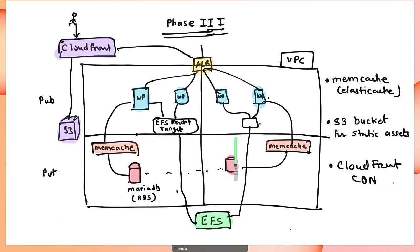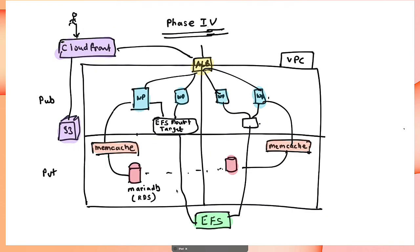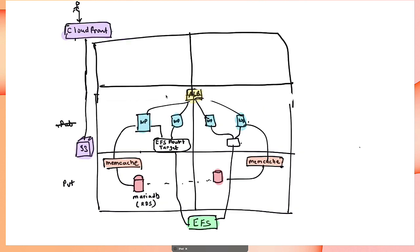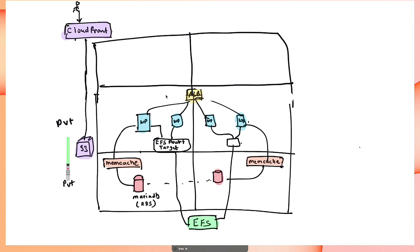Some of these components may exceed free tier — mainly the database. Everything else can be managed within free tier if done correctly. Phase four gets more advanced and closer to the full reference architecture. You refactor by making the WordPress instance private — you can just change the route tables. But as soon as it becomes private, you lose direct access.